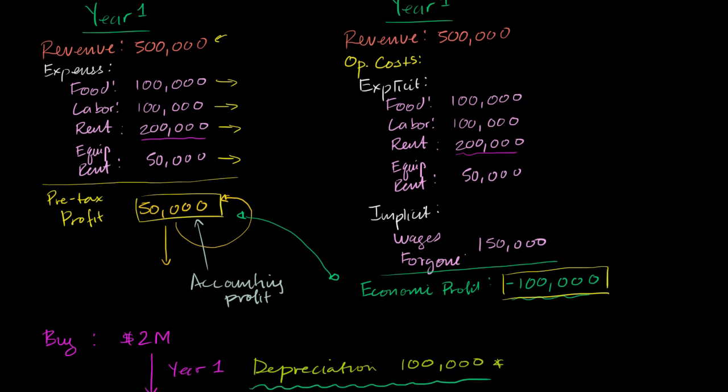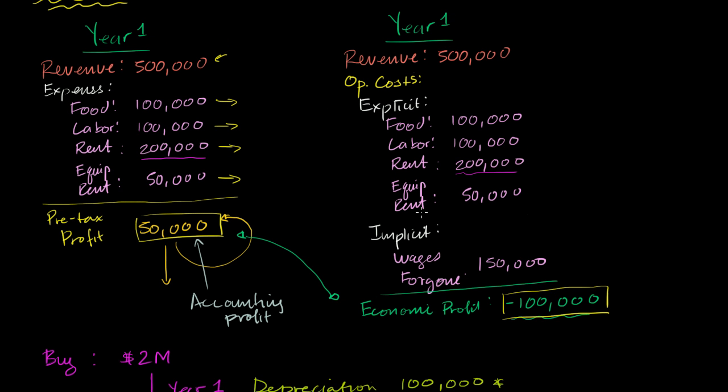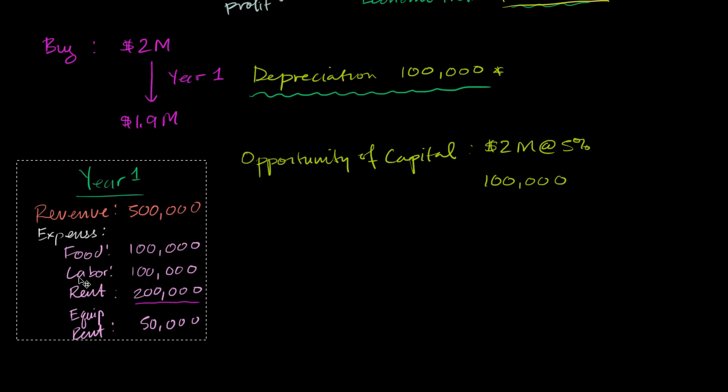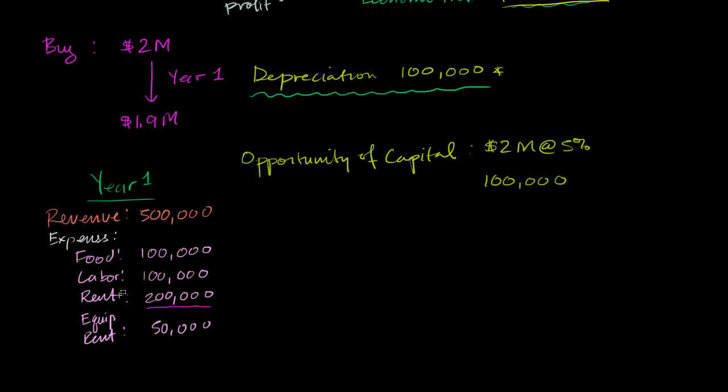So let's redo our two financial statements, the accounting version and the economic version. In the accounting version, we don't have any rent expense. Instead of renting the building, we've gone off and we've bought the building. So our rent expense is now going to be zero. But we do have a depreciation expense of $100,000.